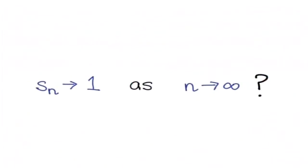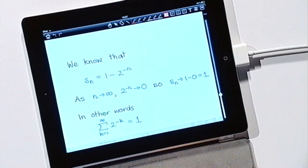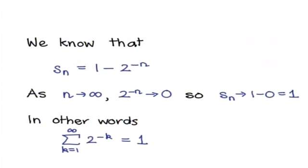Yet another way of writing the same thing: we want to show that s_n tends to one as n tends to infinity. We know this is the case because s_n is simply one minus two to the minus n. As n tends to infinity, two to the minus n tends to zero, so s_n tends to one minus zero, which is one. We've shown what we set out to prove: the series converges because the sequence of partial sums converges, and the series converges to one because the sequence of partial sums converges to one.